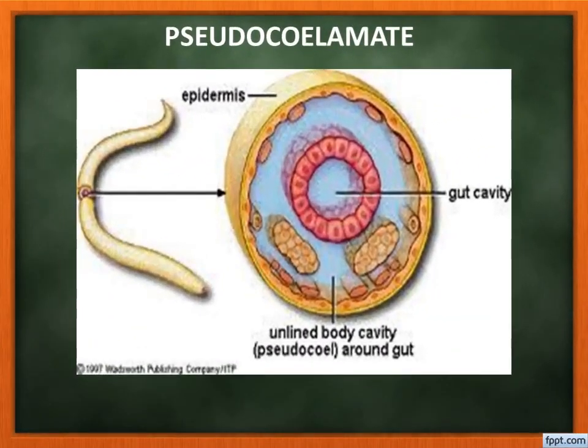Pseudocoelomate means coelom is present but it is not a true coelom — it is filled with fluid. In the diagram, the outermost layer is ectoderm, the innermost is endoderm, and the middle blue layer is mesoderm, but the space within the mesoderm is filled with pseudocoelomic fluid. It is not empty. This is called pseudocoelomate. Example: Aschelminthes.